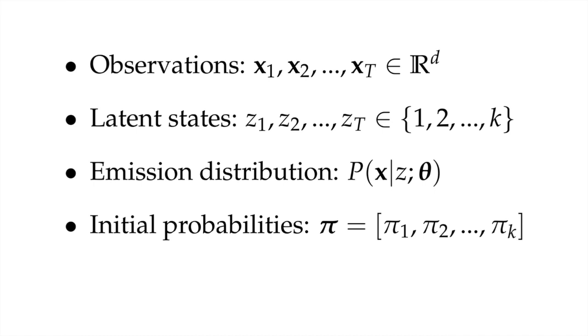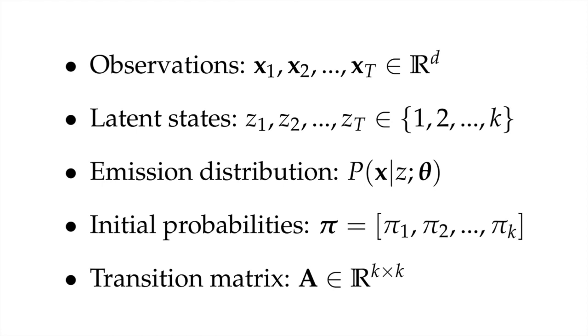We also need something which defines the probability distribution over the initial states of the model. This will just be a categorical distribution — a vector of K probabilities that sum to 1 — expressing how likely it is that the initial state is each of the K possible z's. Finally, we have a transition matrix A, which expresses the chance at each time step of transitioning from one state to another. Since they are probabilities, all of the rows in this transition matrix must sum to one. The diagonal entries express the probability of remaining in the same state at the next step. We will only deal with time-homogeneous Markov models, so the transition matrix A is constant throughout the sequence.